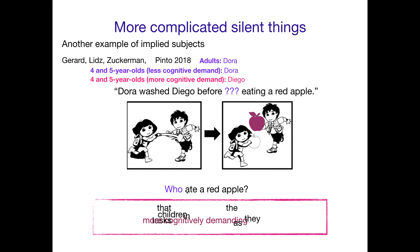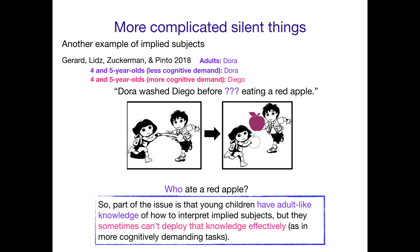What we take from this is that young children may have adult-like knowledge of how to interpret implied subjects. In a less cognitively demanding environment they behave like adults and think Dora is the one eating the apple — that she is the implied subject. But in more cognitively demanding environments they can't deploy that knowledge as effectively, and they default to a sort of closest implied subject, which is Diego in this case — which is not the way adults actually interpret this.